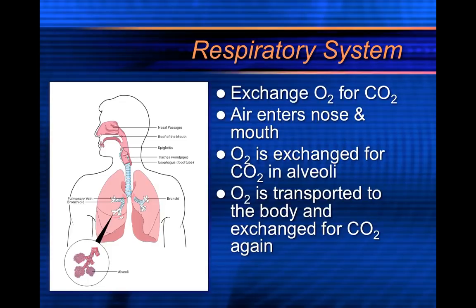So the respiratory system — you exchange oxygen for carbon dioxide. So then the oxygen enters the blood and is circulated throughout the body. And then at the tissue level, or the capillaries, you exchange oxygen for carbon dioxide. This time CO2 enters the blood, travels throughout the body, back to the lungs, and you exhale that carbon dioxide.